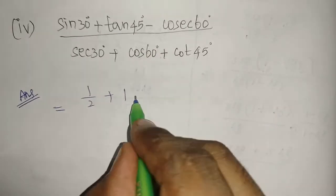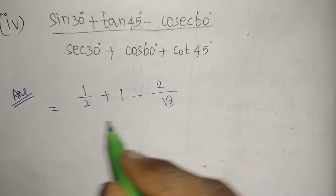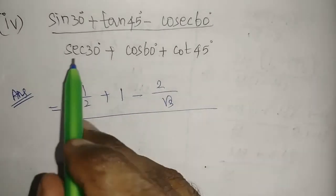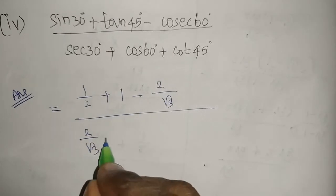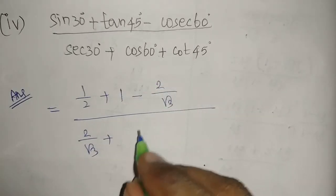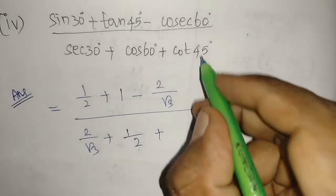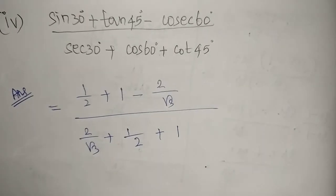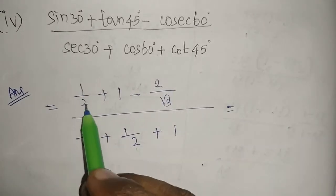Sin 30° is 1/2, tan 45° is 1, minus cosec 60° is 2/√3. These things you should remember. Sec 30° is 2/√3, cos 60° is 1/2, plus cot 45° is 1.